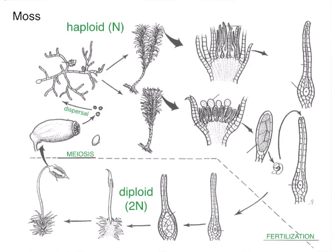Hello, students. This is Non-flowering Plants, and today we're going to talk about the moss life cycle. The top half of this diagram are the gametophytic stages, and the bottom half are the sporophytic stages.